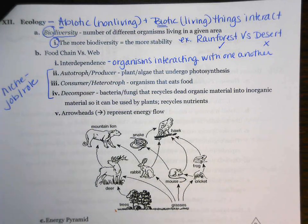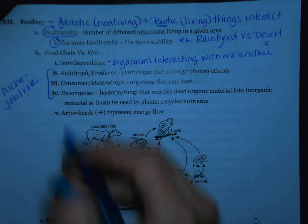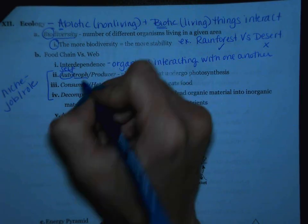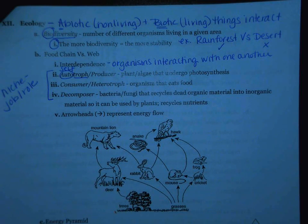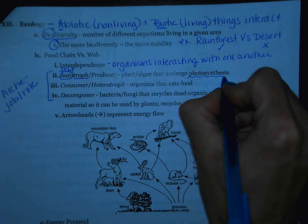The first niche is an autotroph, also called a producer. 'Auto' means self, and 'troph' means feeder. A lot of times people think 'I can feed myself, so I must be an autotroph,' but we're really talking about what's happening inside the cells. Your cells are not capable of making their own food, so you're not an autotroph. Plants and algae are examples of autotrophs — photosynthesis is how they make their own food.